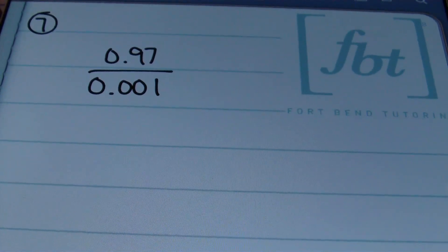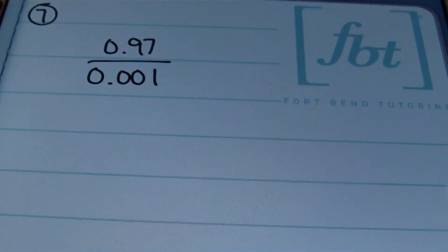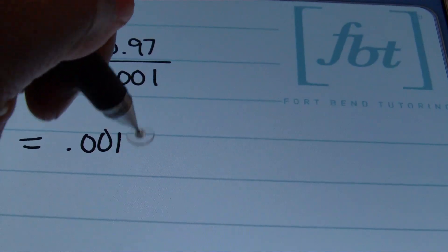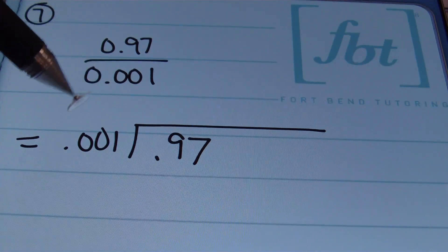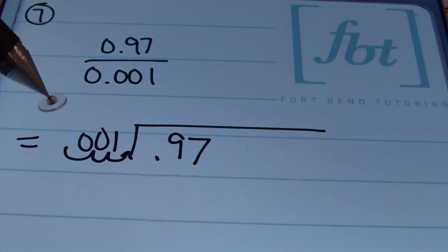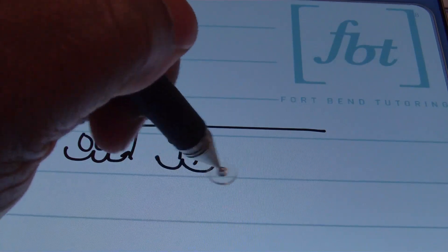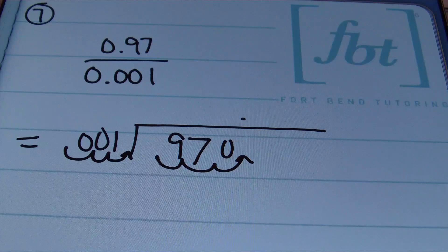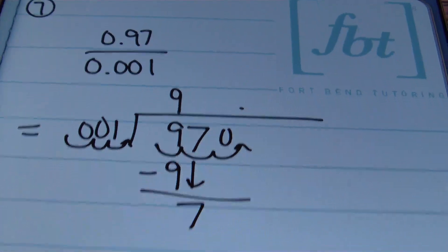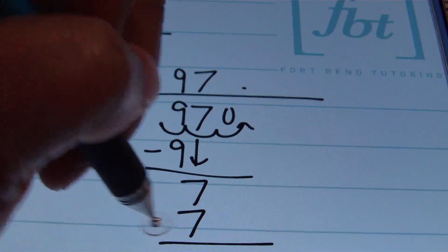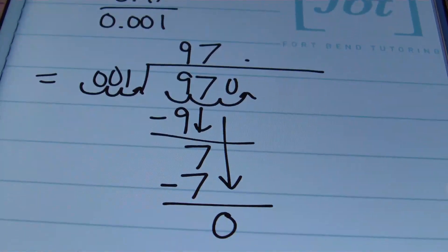Problem number seven: 0.97 divided by 0.001. I'll set this up in long division with 0.001 as the divisor and 0.97 as the dividend. To make the divisor a whole number, move the decimal three places to the right; do the same in the dividend, then bring the decimal straight up. 1 goes into 9 nine times; subtract; bring down 7 — 1 goes into 7 seven times; subtract; bring down 0 — 1 goes into 0 zero times. The answer is 970.